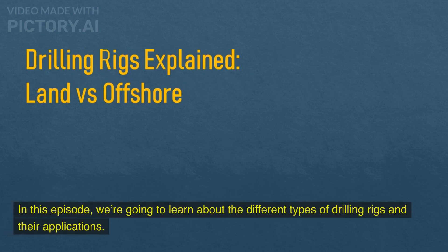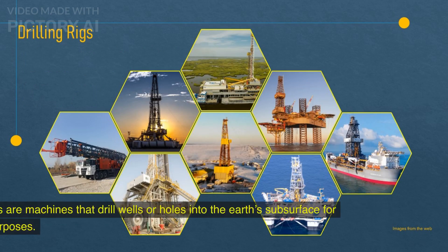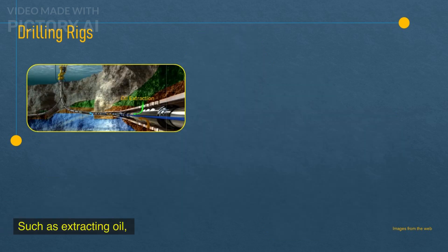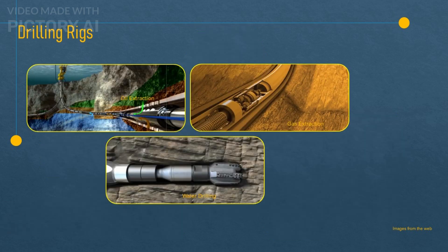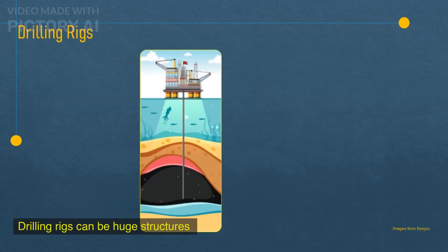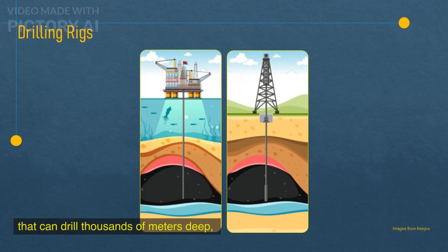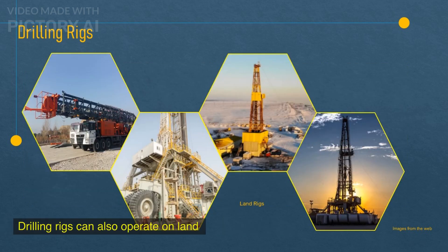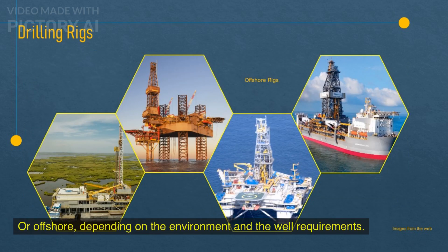In this episode, we're going to learn about the different types of drilling rigs and their applications. Drilling rigs are machines that drill wells or holes into the earth's subsurface for various purposes, such as extracting oil, gas, water, or steam. Drilling rigs can be huge structures that can drill thousands of meters deep, or they can be small enough to be mounted on trucks. Drilling rigs can also operate on land or offshore, depending on the environment and the well requirements.